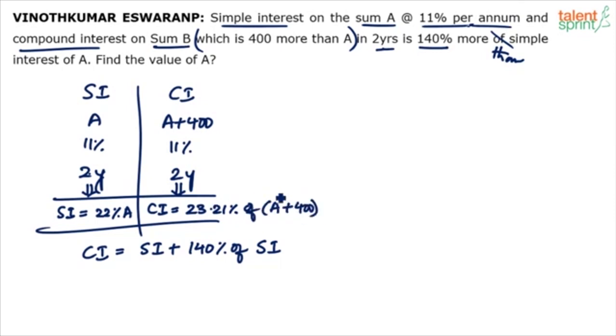I think couple of you have mentioned that this is from your IBPSPO 2017 exam. So interesting I am sure. I mean exciting for all of you because we are solving something which was very recently asked in your bank exam. So simple interest is going to be 22% of the principle amount. 11% for 2 years. Compound is 23.21. How did we arrive at 23.21? 11 plus 11 plus 11 into 11 by 100. You know A plus B plus AB by 100. So 22 and this is 1.21. 23.21. 23.21 percentage of the principle in this case is A plus 400.